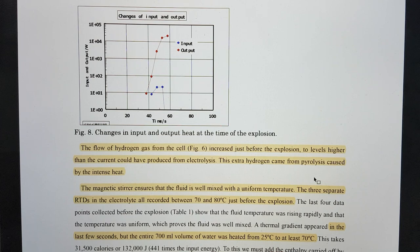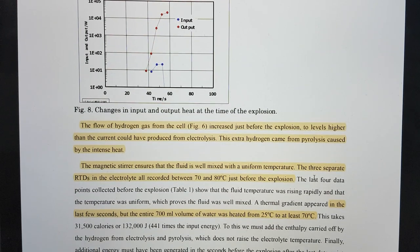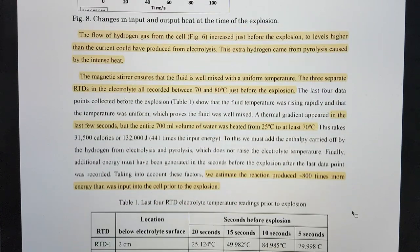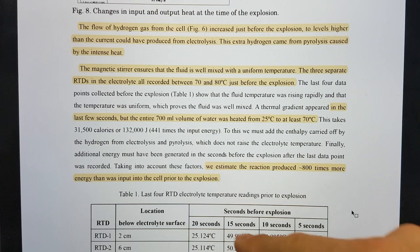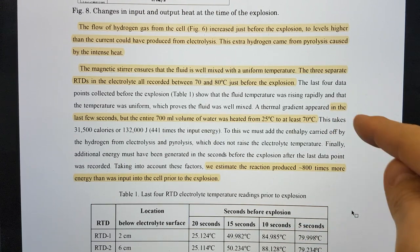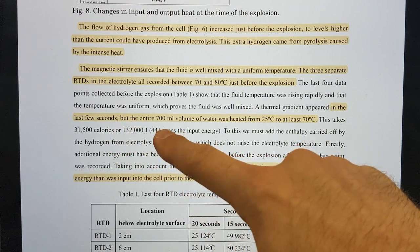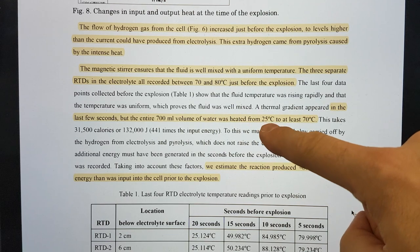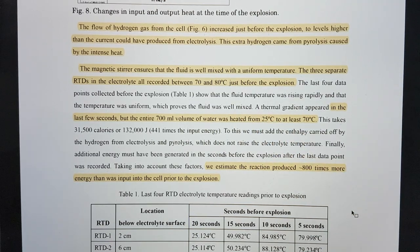The magnetic stirrer ensures that the fluid is well mixed with a uniform temperature. The three separate RTDs in the electrolyte all recorded between 70 degrees and 80 degrees just before the explosion. There's a table here where you have the last four data points. The thermal gradient appeared in the last few seconds, but the entire 700 milliliter volume of water was heated from 25 degrees C to at least 70 degrees C during this short period of time.